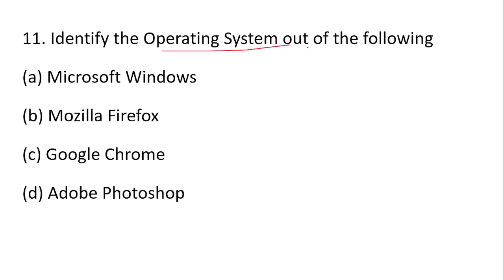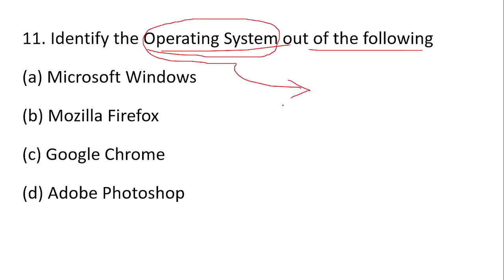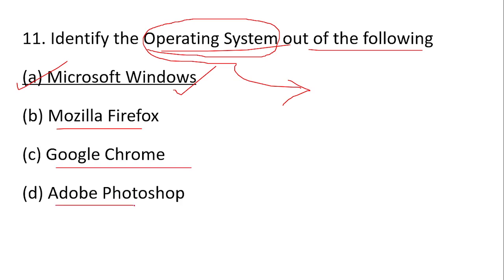Identify the operating system from the following. Operating system is system software — it runs the computer hardware. There is application software and system software. Operating system is system software. Option A, Microsoft Windows, is your right answer. Mozilla Firefox and Google Chrome are browsers; Adobe Photoshop is photo editing software.